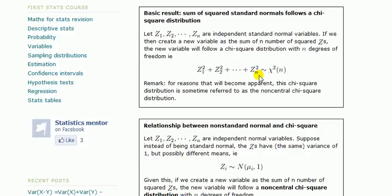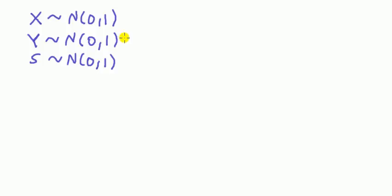In short, we can say the sum of squared normals is chi-square. Let's look at an example.